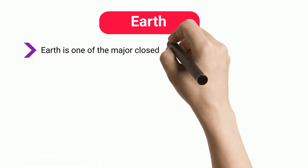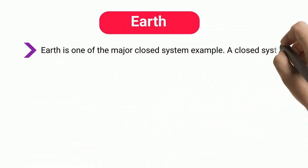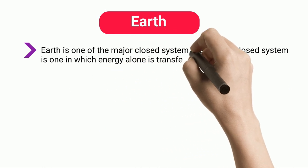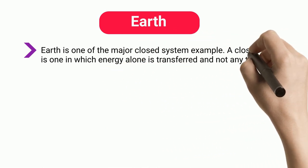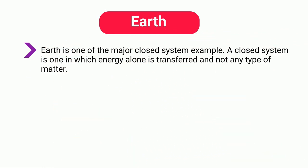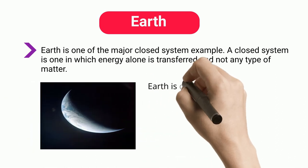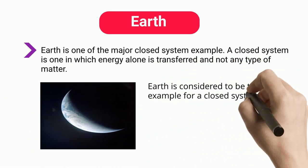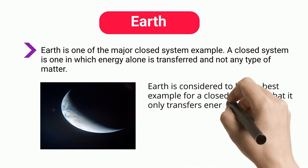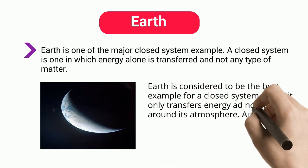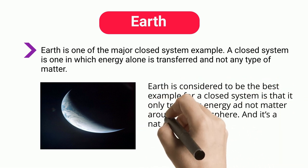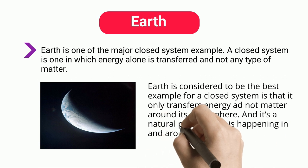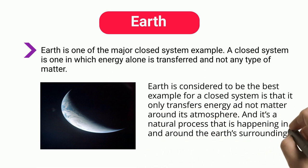Earth is one of the major closed system examples. A closed system is one in which energy alone is transferred and not any type of matter. Earth is considered to be the best example of a closed system because it only transfers energy and not matter around its atmosphere, and this is a natural process happening in and around the Earth.